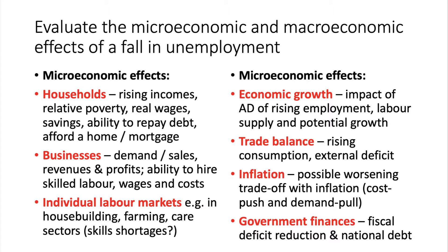Macroeconomics broadens the discussion out. You cannot go wrong if you link something to your main macroeconomic objectives. So unemployment is our falling variable — what are the possible connections with economic growth? For example, if there's an outward shift of aggregate demand, what happens to employment and to the number of people wanting to join the labour force?